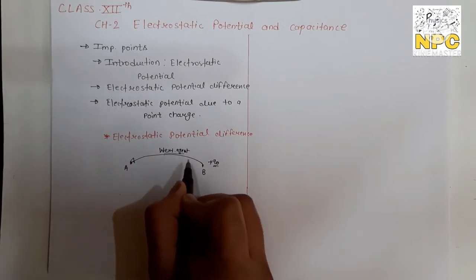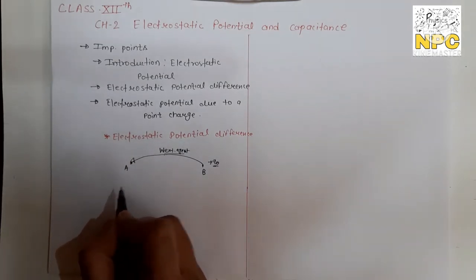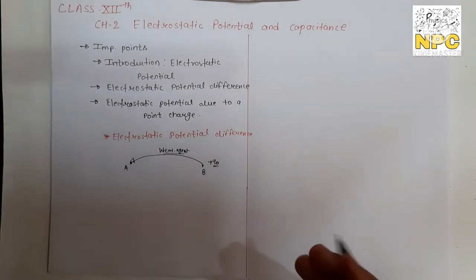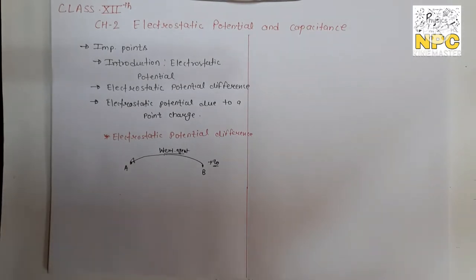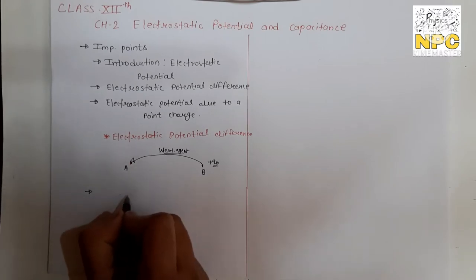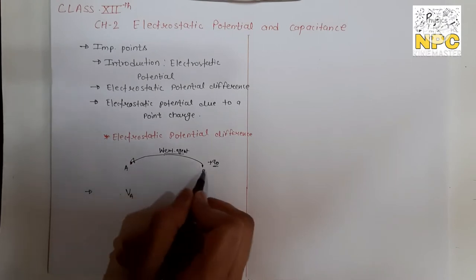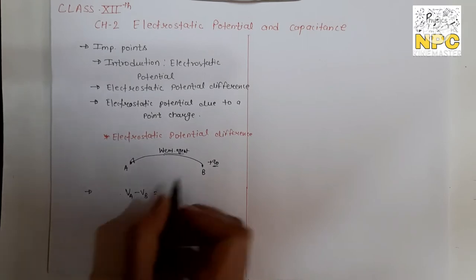Our aim is to find the potential difference. If you remove the external agent, the charge Q₀ will directly move from point B to A on its own, and kinetic energy will increase a lot, so potential will decrease. To find potential difference, we define: VA minus VB equals the potential difference between the two points, which is final minus initial.